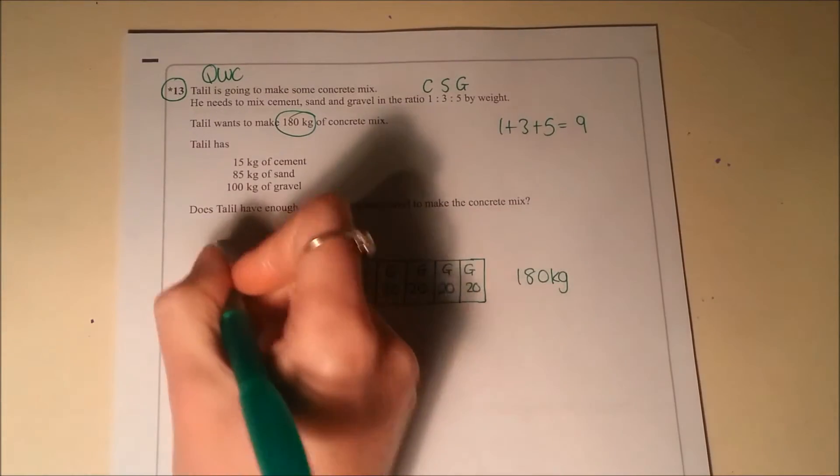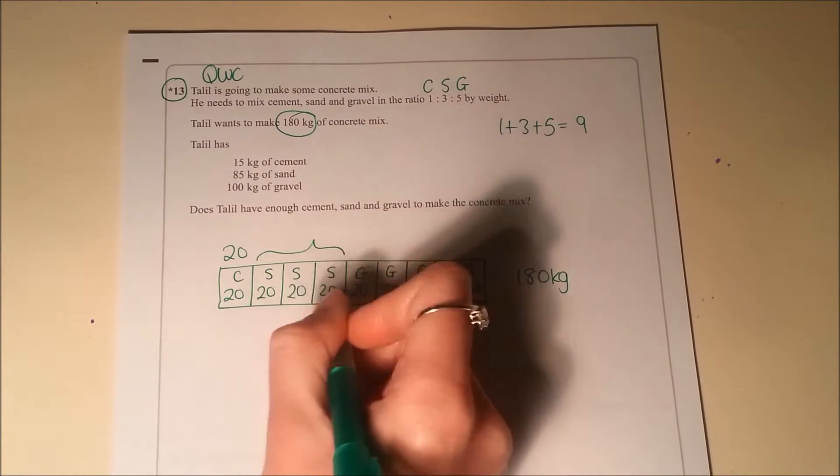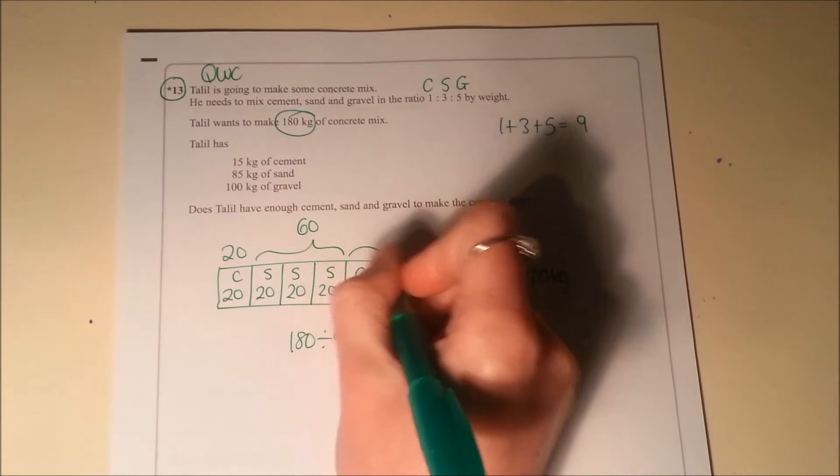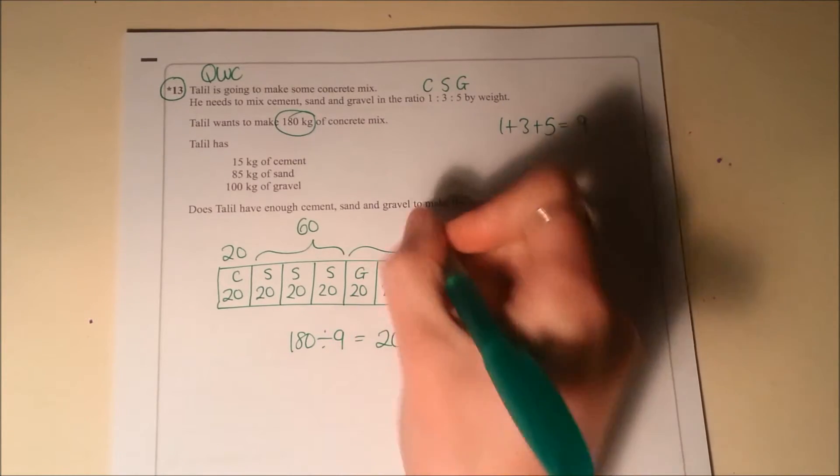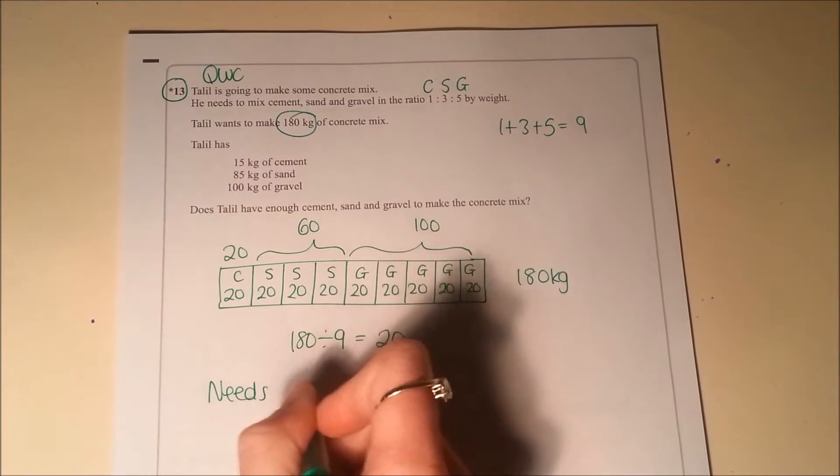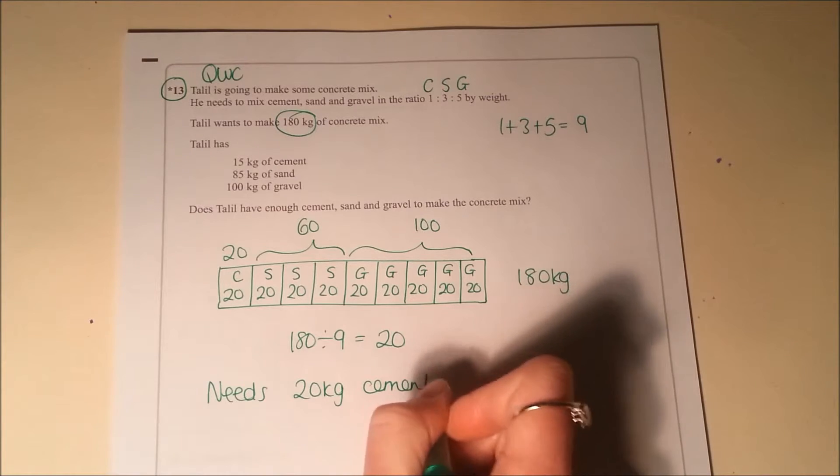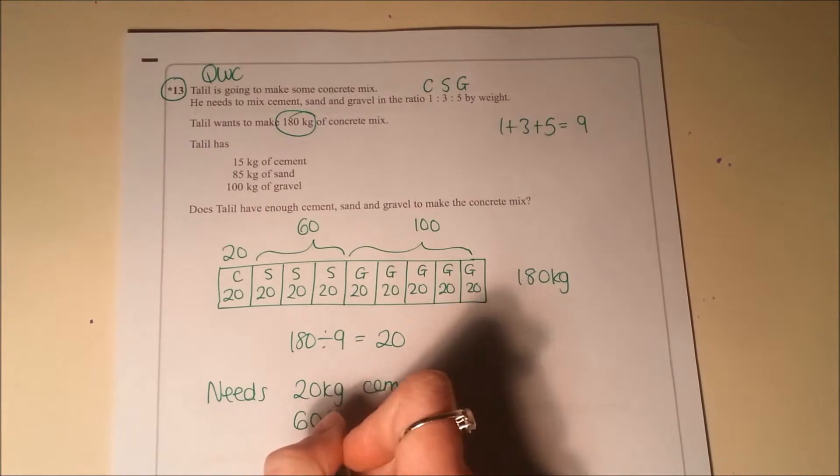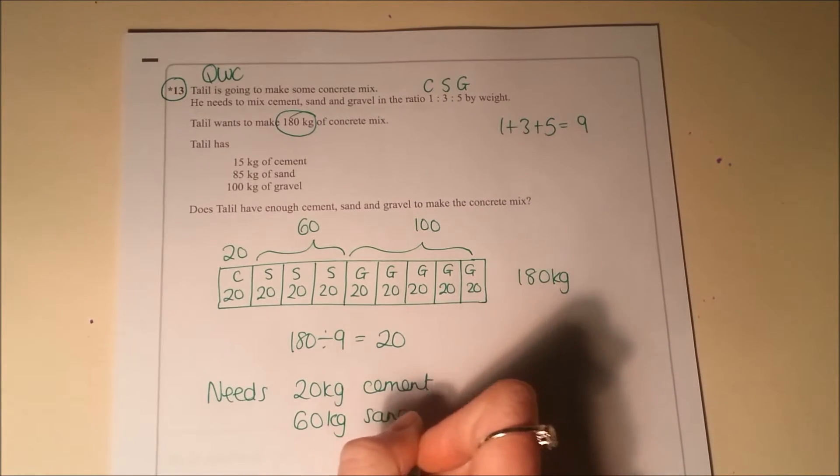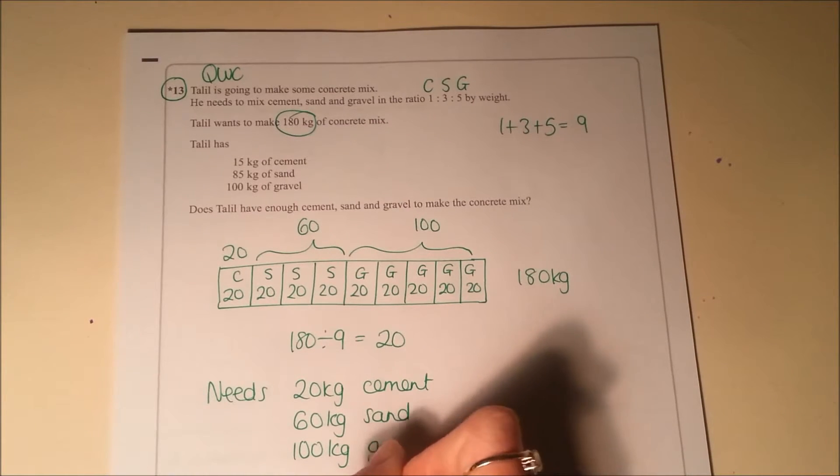So in total he's going to need 20 cement. He's going to need these 3 here of sand, that's 60. And then this many gravels, that's 100. So he needs 20 kilograms of cement, 60 kilograms of sand and 100 kilograms of gravel.